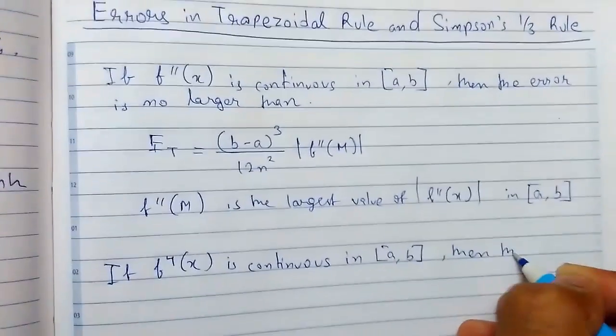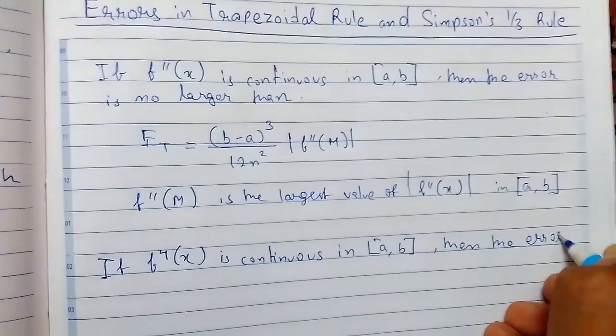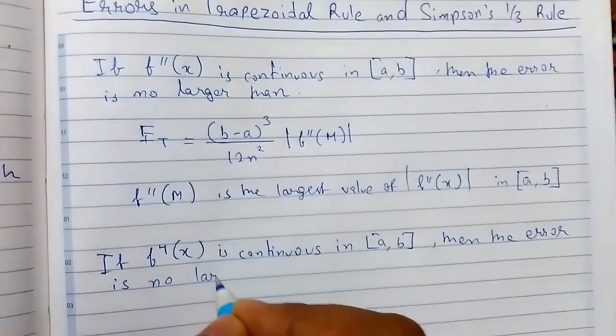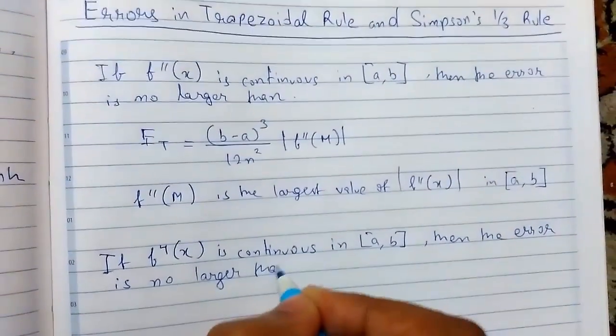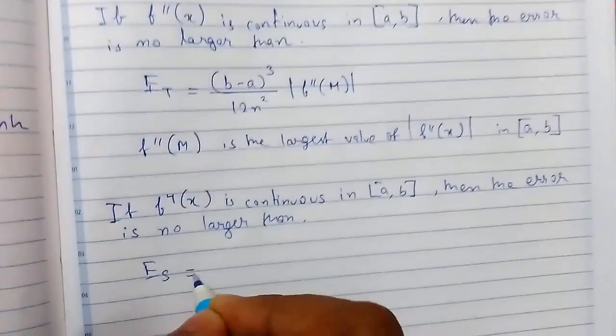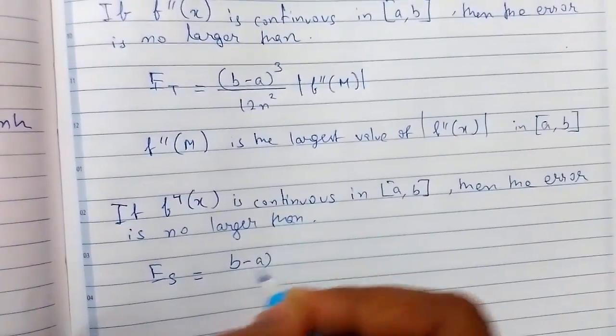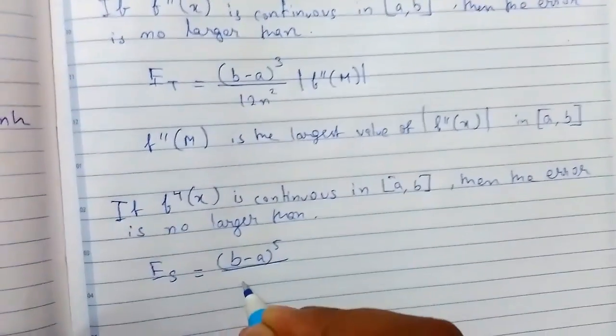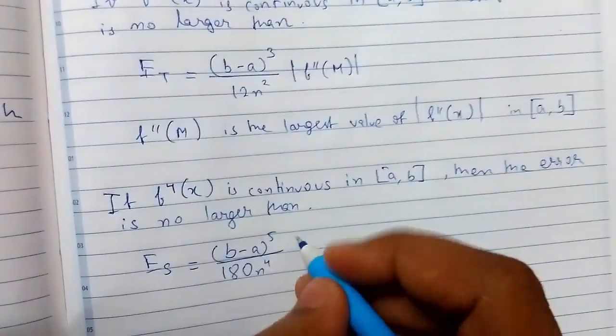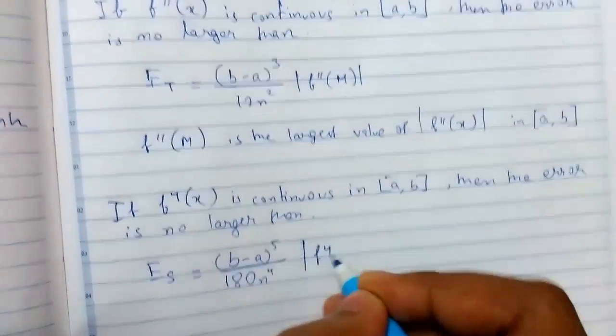then the error is no larger than E_S = (b-a)⁵/(180n⁴) times the modulus of f⁽⁴⁾(m).